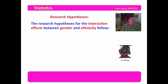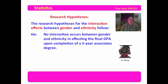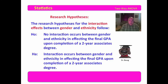Now we move to the important one: the research hypotheses for the interaction effects between gender and ethnicity. The null hypothesis is that no interaction occurs between gender and ethnicity in affecting the final GPA upon completion of a two-year associate's degree. The alternate is that interaction occurs between gender and ethnicity in affecting the final GPA. With our two-way ANOVA, we're actually examining three things: the effect of gender, the effect of ethnicity, and the interaction of gender and ethnicity — all upon the dependent variable.